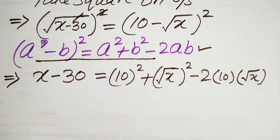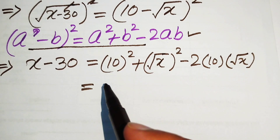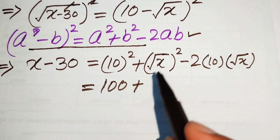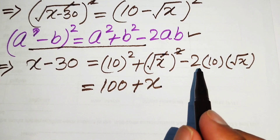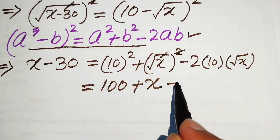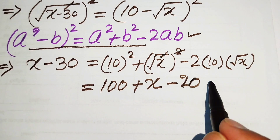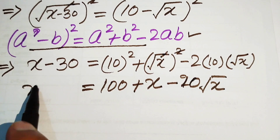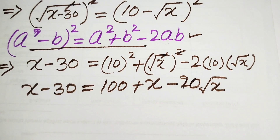In the next step, 10 squared equals 100; the square and square root cancel to give x; and 2 times 10 becomes 20 times square root of x. So the equation is: x minus 30 equals 100 plus x minus 20 times square root of x.